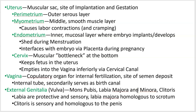The labia majora are homologous to the scrotum — the same tissue in an embryo that becomes labia majora, if you become male, becomes the scrotum. Another homologous structure between males and females is the clitoris, which is homologous to the penis. The clitoris is sensory and doesn't serve as a urogenital opening — it's strictly sensory and sexual in function. Females have a urethral opening that's separate from the genital opening.